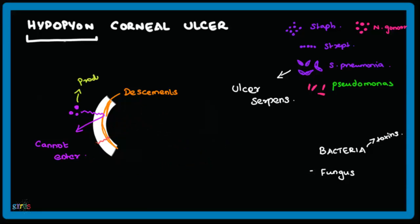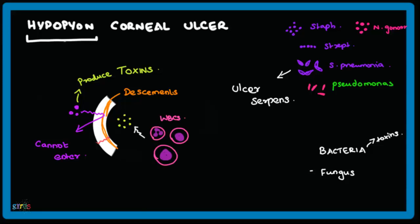However, these bacteria produce toxins which can enter into the anterior chamber, and they combine with the WBCs. This forms the hypopion, which is a sterile medium.